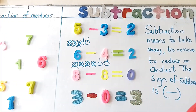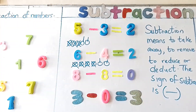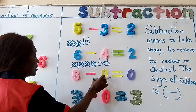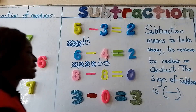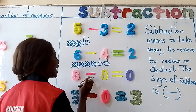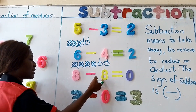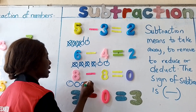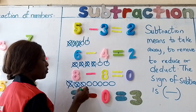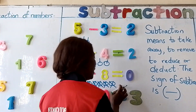Now in subtraction we have some rules, just as we have in addition. When you do subtraction of a number, if you deduct the same number from the same number, what you have is zero — your answer will be zero. Like the example on the board: eight minus eight. Let me carry it out. I have eight counters and I take away eight. I have nothing left, and zero means nothing.